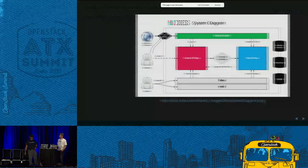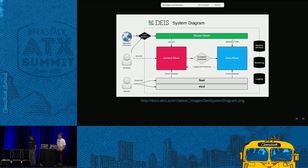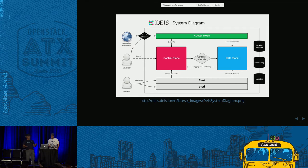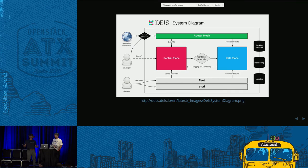There are really three big components in Deis: the control plane, the data plane, and the router. The data plane is really where the containers are created. The control plane essentially orchestrates how they are created. The router basically routes traffic to those containers. The nice thing is you can scale the data plane independent of the control plane or the router mesh — if you have an application that needs 1,000 containers, you can just have the data plane scale 1,000 times.